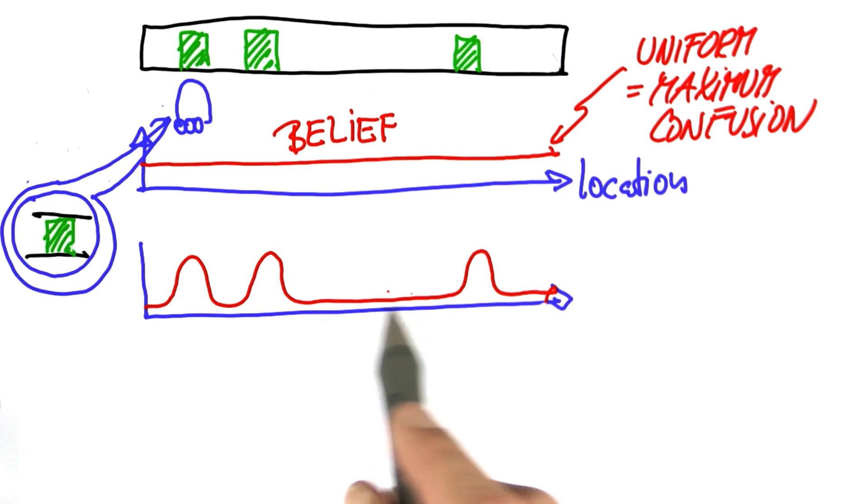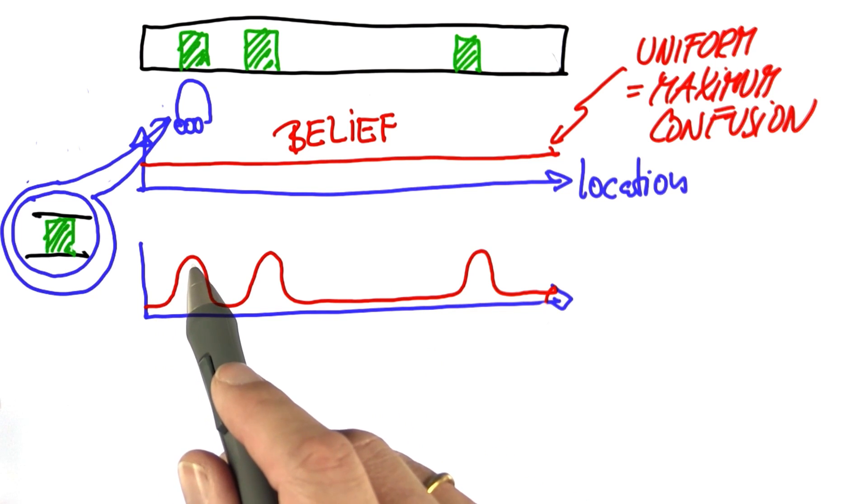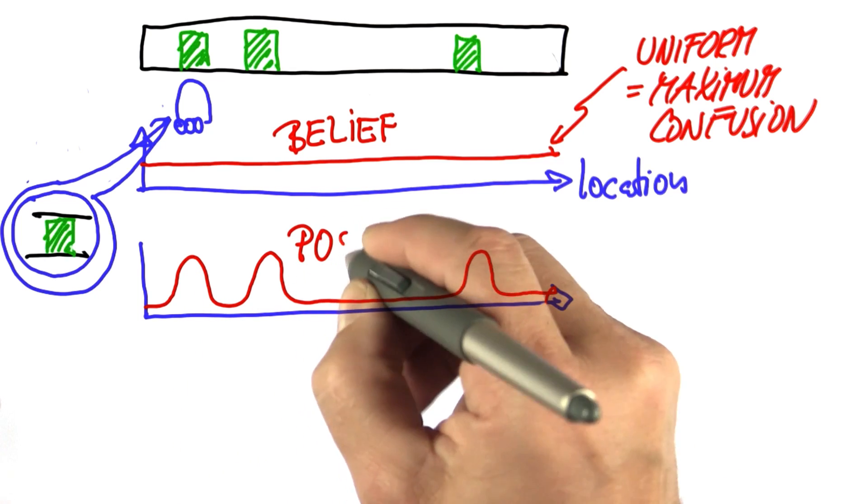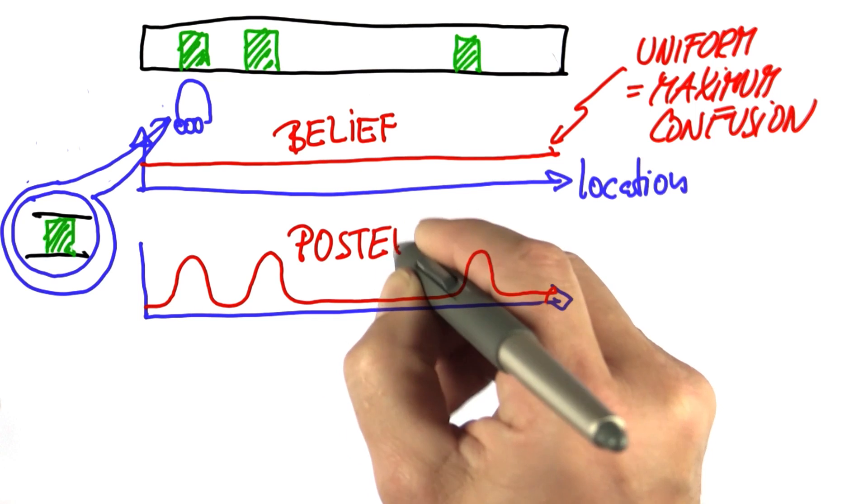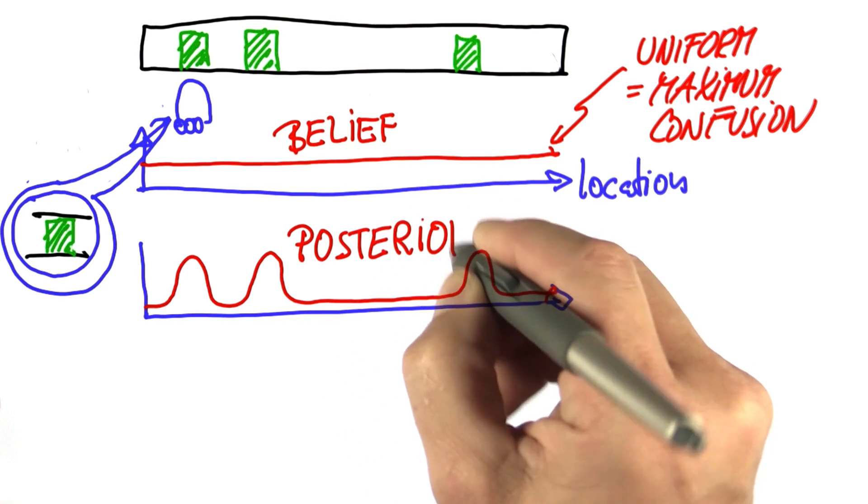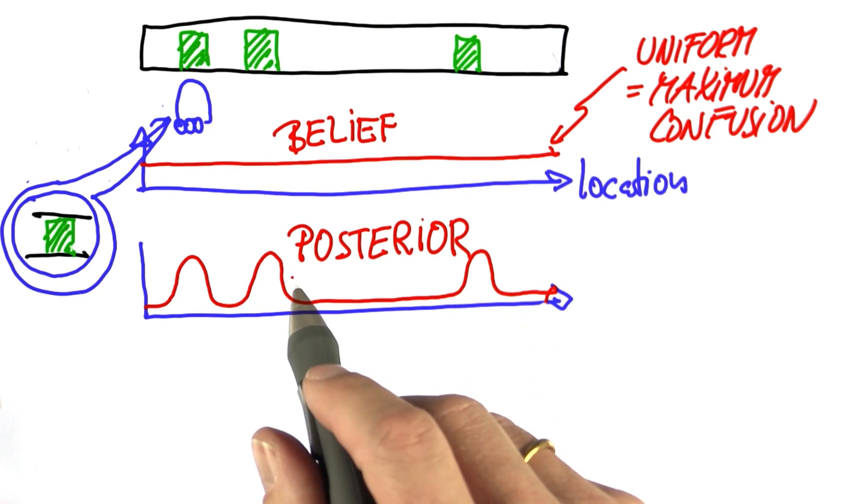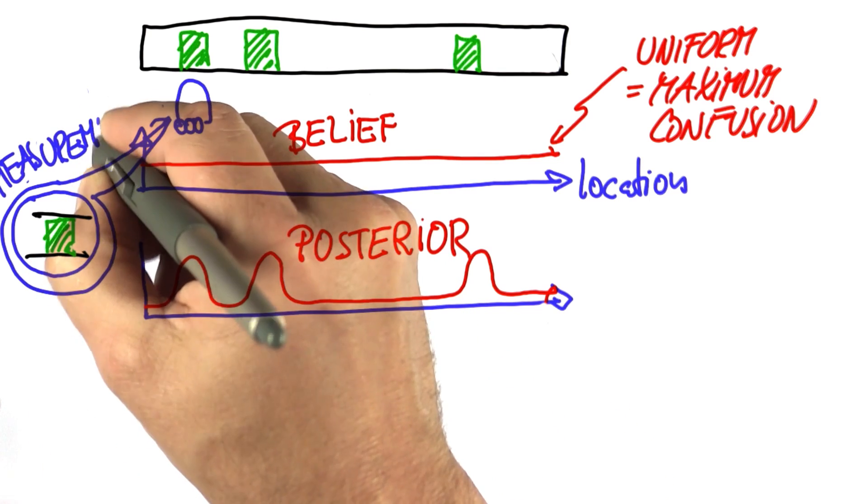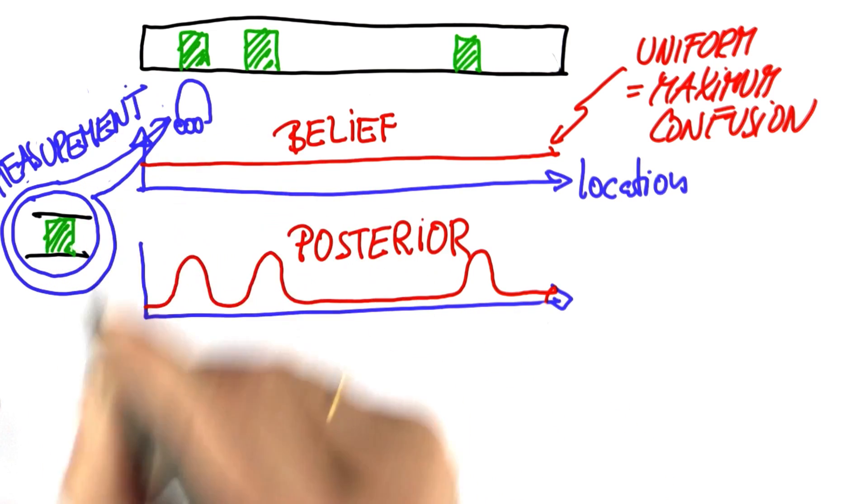For the three locations adjacent to doors, we now have an increased belief of being there, whereas all the other locations have a decreased belief. This is a probability distribution that assigns higher probability for being next to a door, and it's called the posterior belief, where the word posterior means it's after a measurement has been taken.